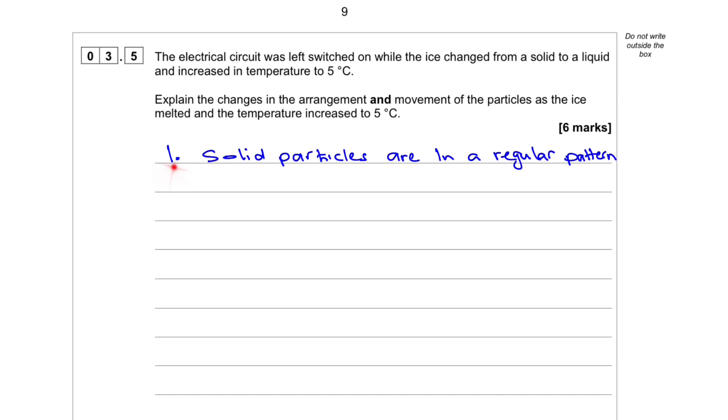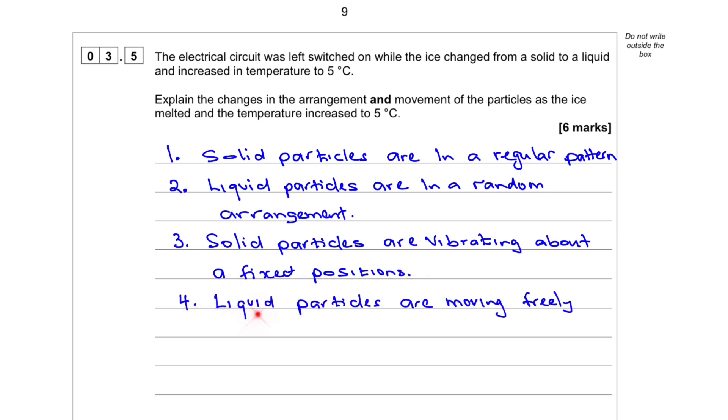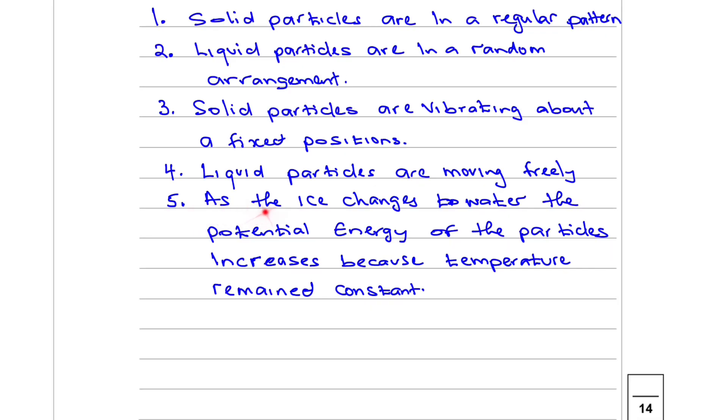First, the solid particles are in a regular pattern. Number 2, the liquid particles are in a random arrangement. Number 3, solid particles are vibrating about a fixed position. Number 4, liquid particles are moving freely. Number 5, as the ice changes to water, the potential energy of the particles increases because temperature remained constant.